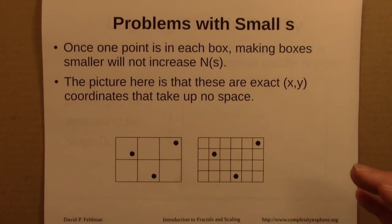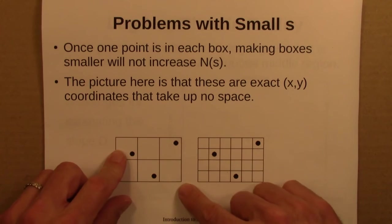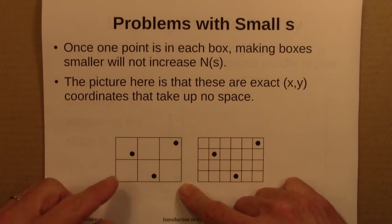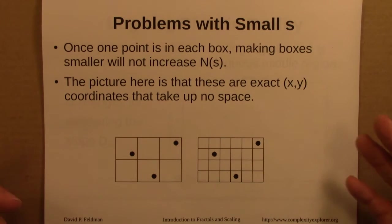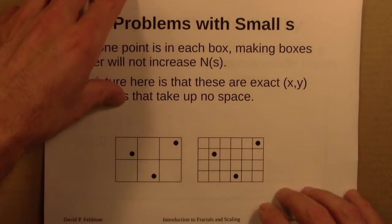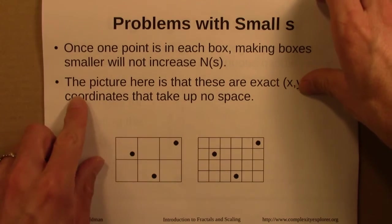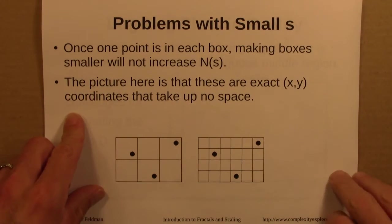So at a certain point, you don't get any larger N(s), because you just have one point for every box, and that's the end of the story pretty much. So this is another example of the problems that one encounters with a small s.